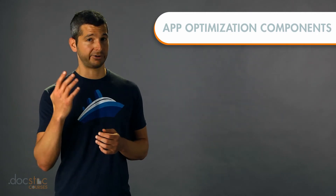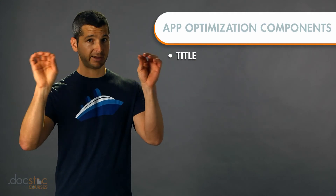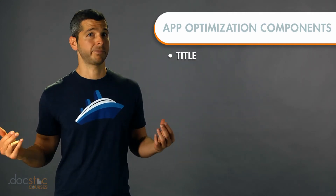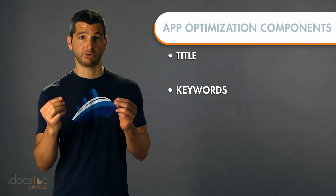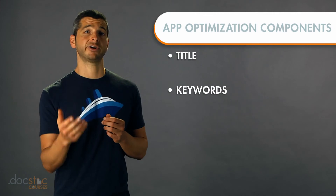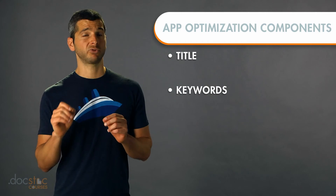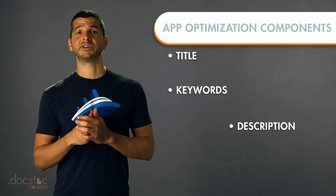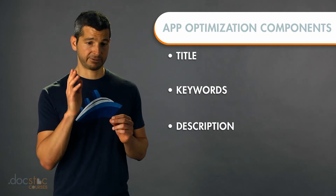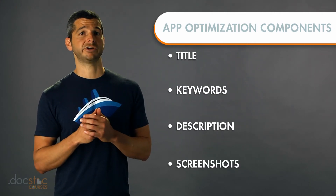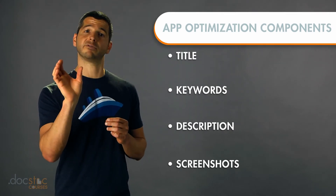Let me introduce you to the four pieces of your app profile. First, there's the title — that's the main headline of your app, what shows up. So 'Cruise Shipmate' is an example of an app name. Next, there's keywords. Keywords don't actually show up on your app profile — that's behind the scenes. Those are words that you're trying to target. Then there's the description of the app, which is the meat — it has the details, the features, what it does. And finally, there's the screenshots — the big images that give you a taste of what the app looks like.